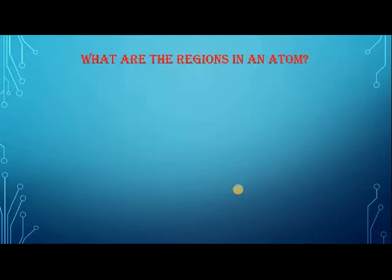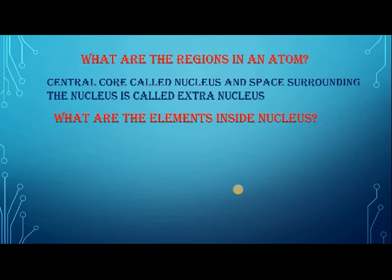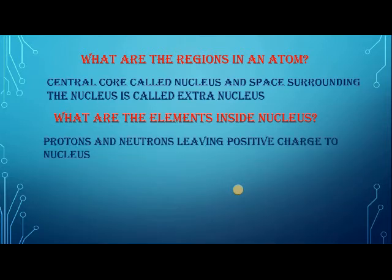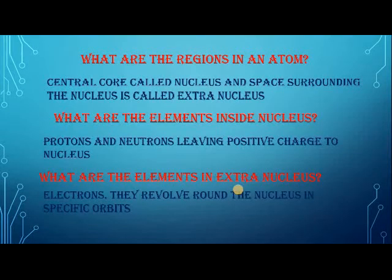What are the regions in an atom? The central core of the atom is called the nucleus, and the space around the nucleus is called extranuclear. What are the elements inside the nucleus? Protons and neutrons. Since protons have a positive charge and neutrons have no charge, the charge of the nucleus is positive. What are the elements in extranuclear? The electrons, which revolve around the nucleus in orbits, just like our solar system — the way planets revolve around the sun in their orbits, electrons revolve around the nucleus in its orbit.